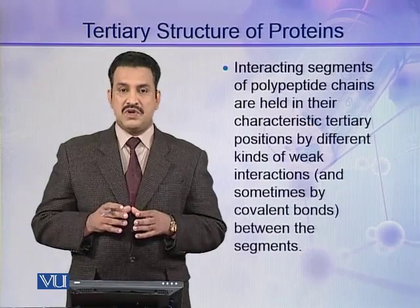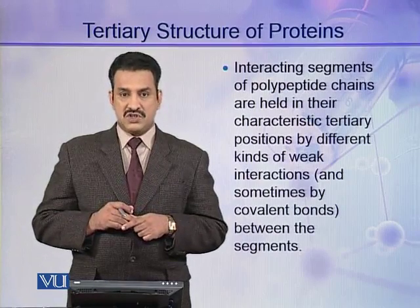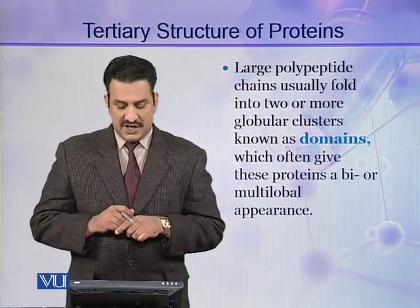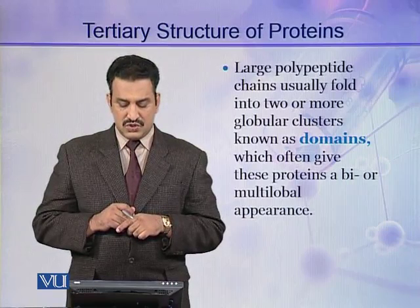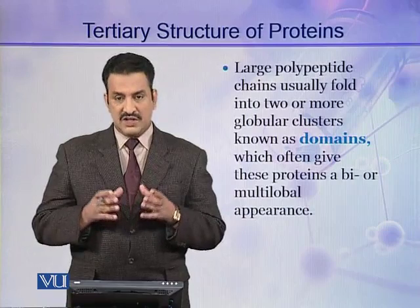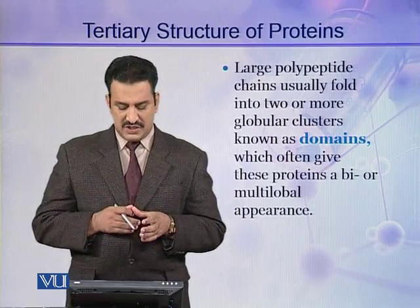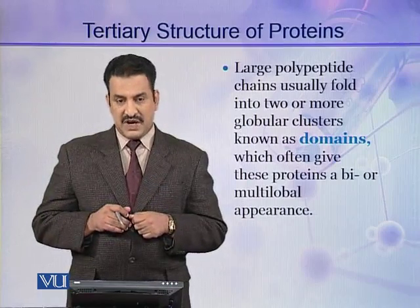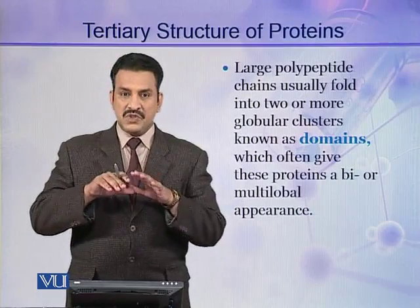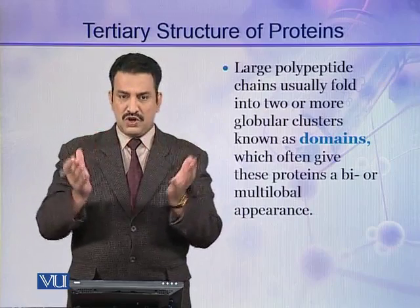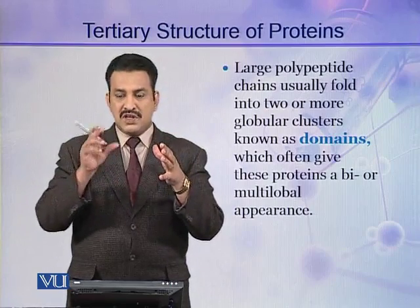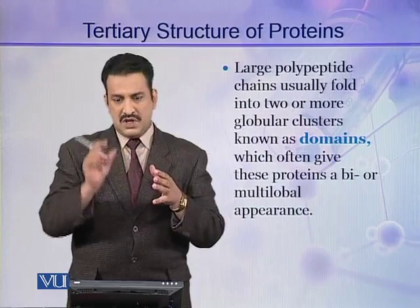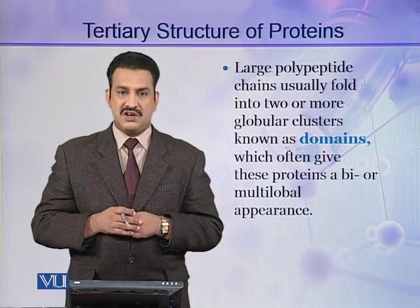In this way, a stable three-dimensional structure is formed, which is the tertiary structure of proteins. Some very large polypeptide chains usually fold into two or more globular clusters, and these clusters are called domains. Within a fully folded protein molecule, there may be two or more smaller clusters of polypeptide chains, and these smaller clusters are called domains.